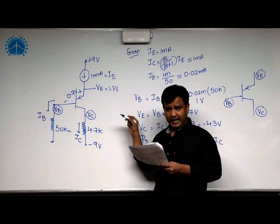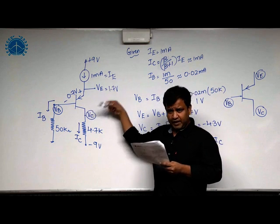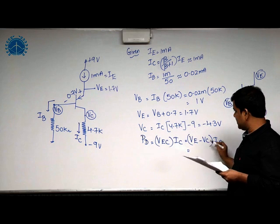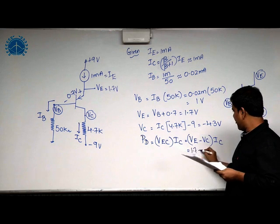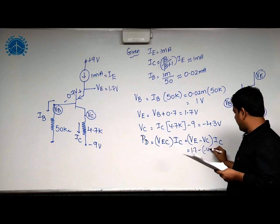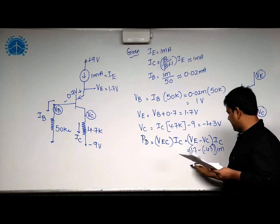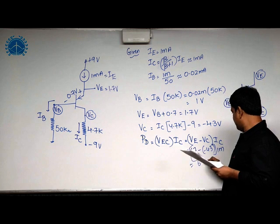So, the power dissipation is given as Vec multiplied by Ic. What is Vec here? Ve minus Vc. Ve is 1.7 and Vc is minus 4.3 into 1 milliampere which is approximately 6 milliwatt.